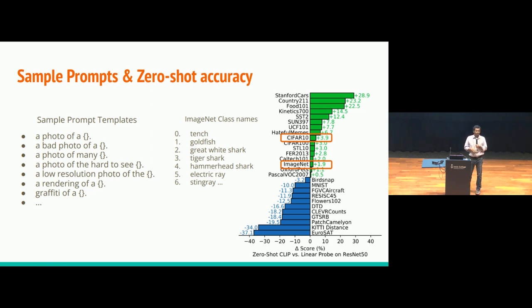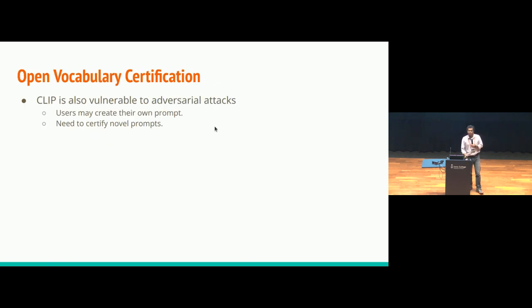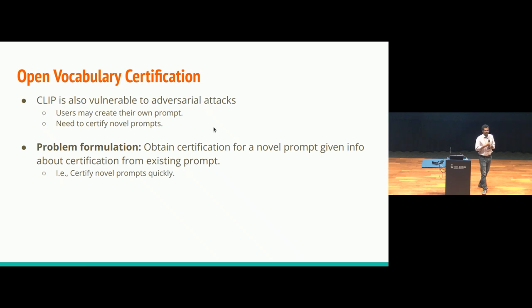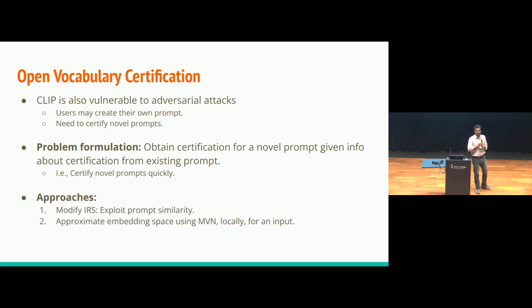All this is great. We got kind of a universal classifier, but sadly, it is also vulnerable to adversarial attacks. And another thing is that, since an end user can make their own prompt for classification, we define our problem that if we are given the certification information from some existing prompts, then we would like to certify a novel prompt quickly. We are allowed to use the existing prompts and their certification information. For that, we have developed two methods. And by certification here, I mean adversarial certification.